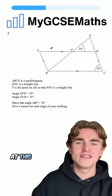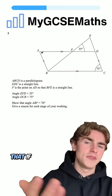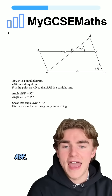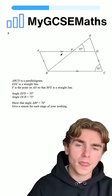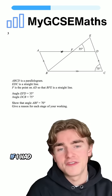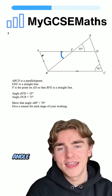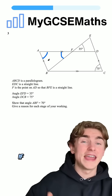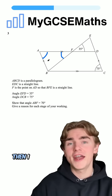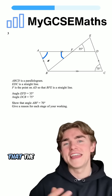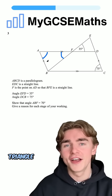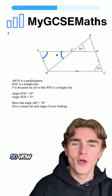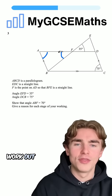Now, looking at this, if I want to work out angle ABF, it would be super helpful if I had this angle here and this angle here. Because if I did, then I could use the fact that the angles in a triangle add up to 180. So how can I work out these two?